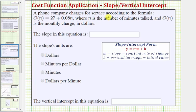A phone company charges for service according to the formula C of n equals 27 plus 0.08n, where n is the number of minutes talked and C of n is the monthly charge in dollars. We're asked to find the slope, the slope's units, and the vertical intercept.